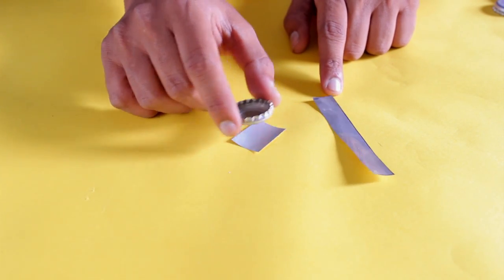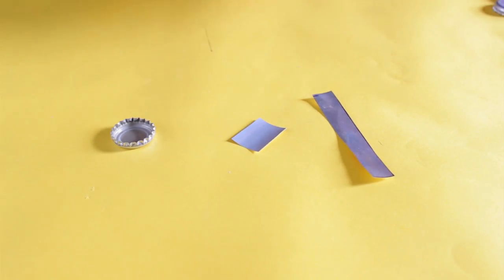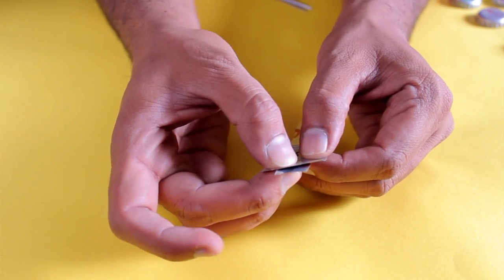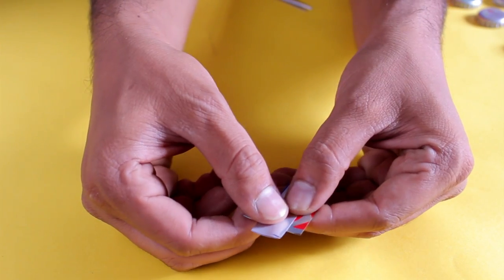Now place the small portion on the big one like this and twist it backward like this. Make sure that you are leaving small piece of bigger portion towards the end.